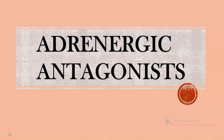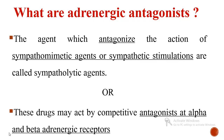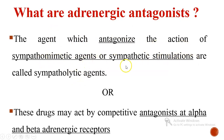Let us see the definition of sympatholytics or adrenergic antagonists — also called anti-adrenergic drugs. The agents which antagonize the action of sympathomimetic agents or sympathetic stimulations are called sympatholytic agents. 'Sympatho' refers to the sympathetic nervous system and 'lytics' means lysis or breakdown. These drugs may also act by competitive antagonism at alpha and beta adrenergic receptors.